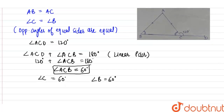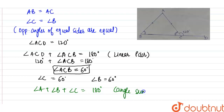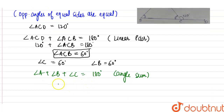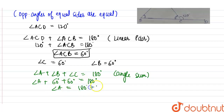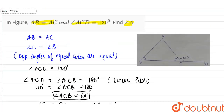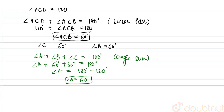We know that the sum of the three angles of a triangle is equal to 180 degrees — this is the angle sum property of a triangle. Angles B and C are 60 degrees each. So angle A plus 60 plus 60 equals 180 degrees. Therefore, angle A equals 180 minus 120, which gives angle A equal to 60 degrees.